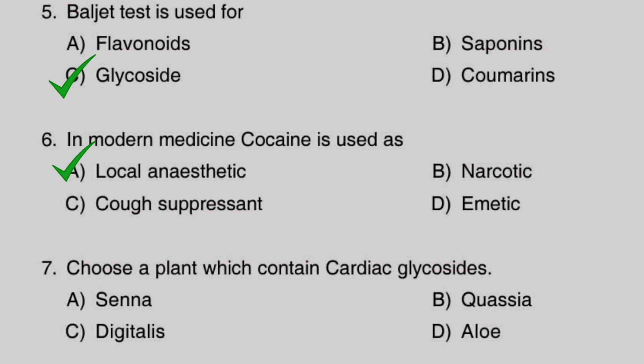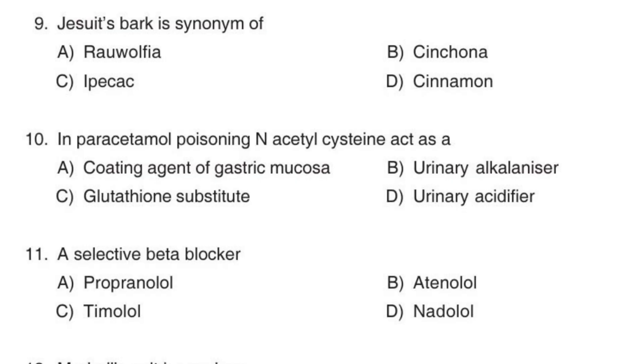Next question: choose a plant which contains cardiac glycosides — Option A: senna, Option B: quassia, Option C: digitalis, Option D: aloe. The correct option is C, digitalis. Digitalis is a drug which contains cardiac glycosides. Both aloe and senna contain anthraquinone glycosides.